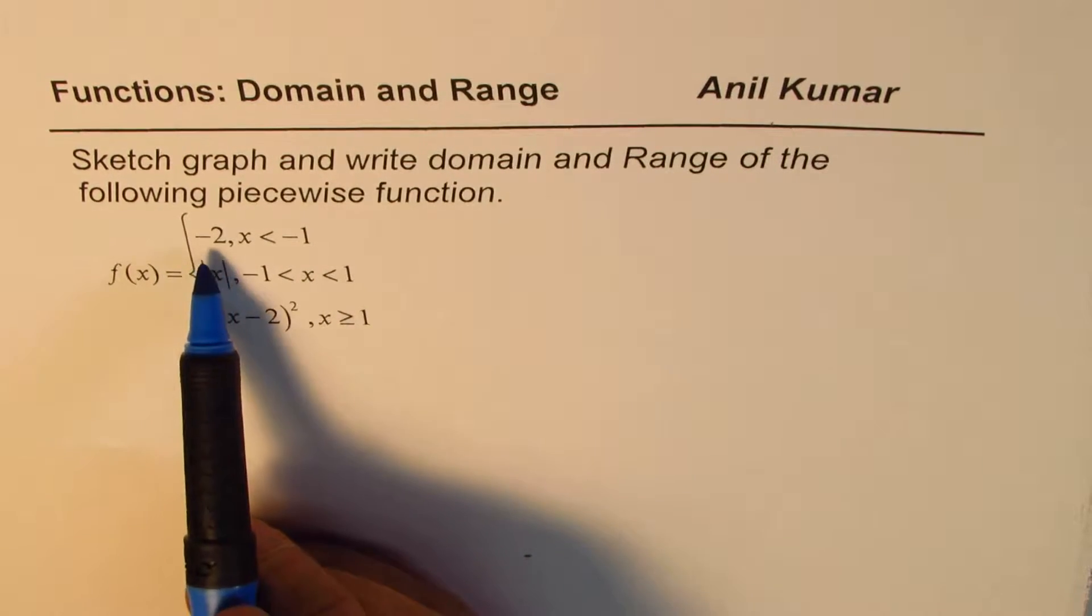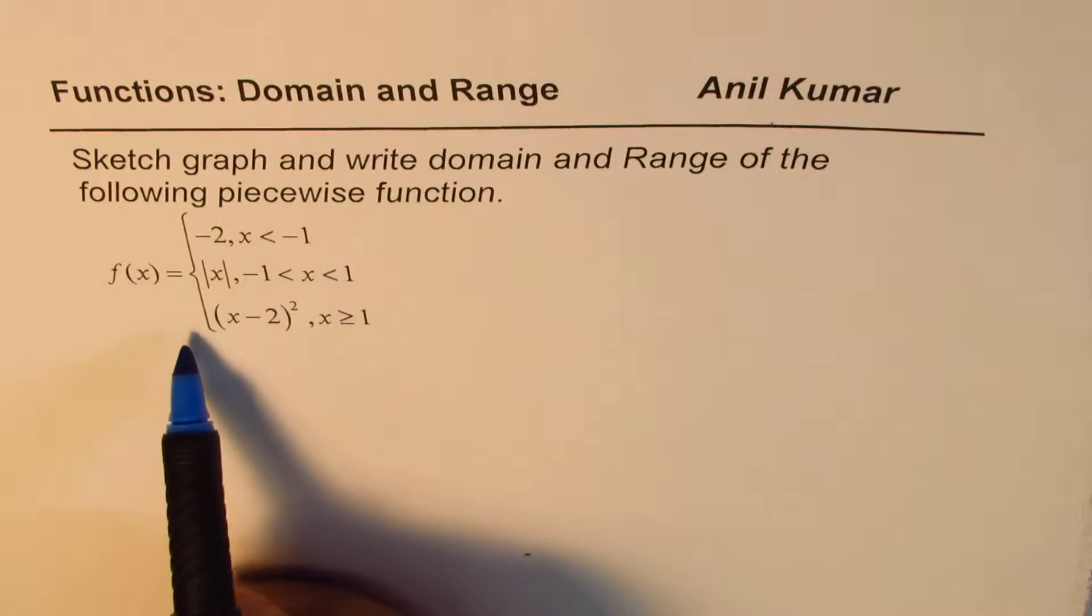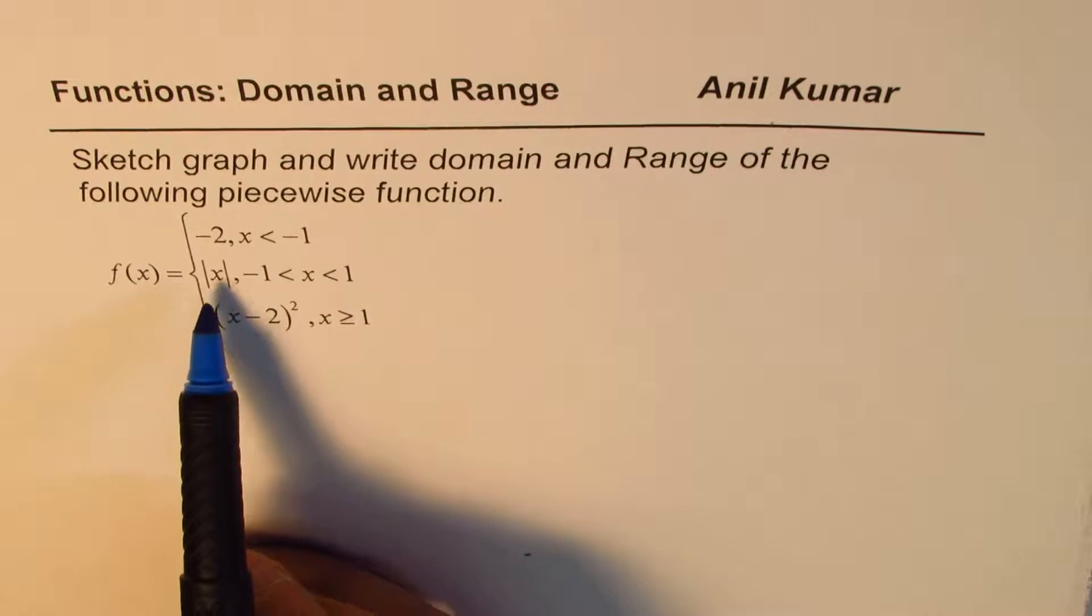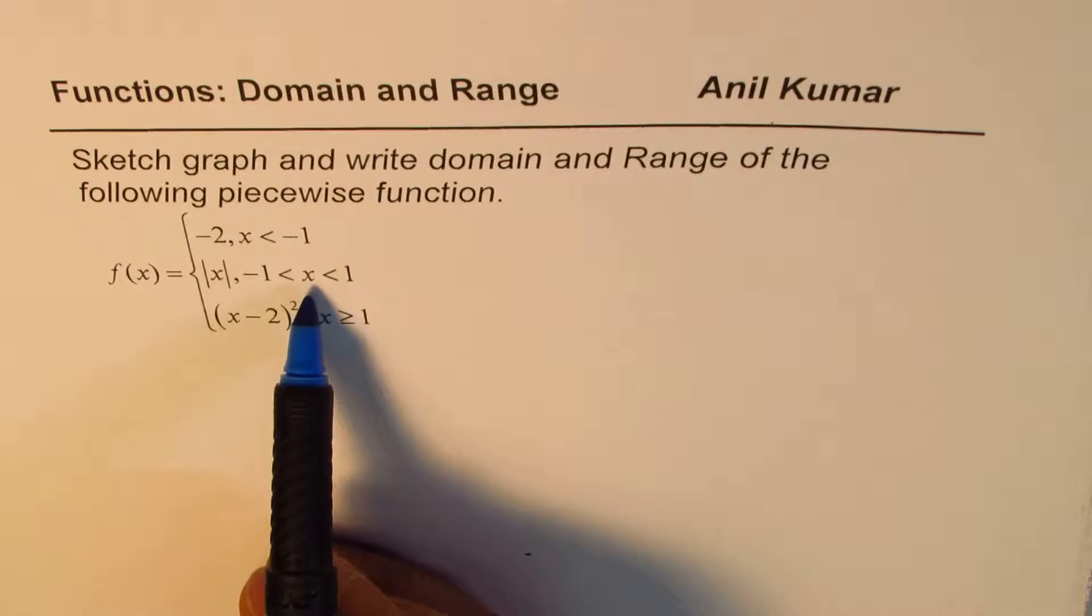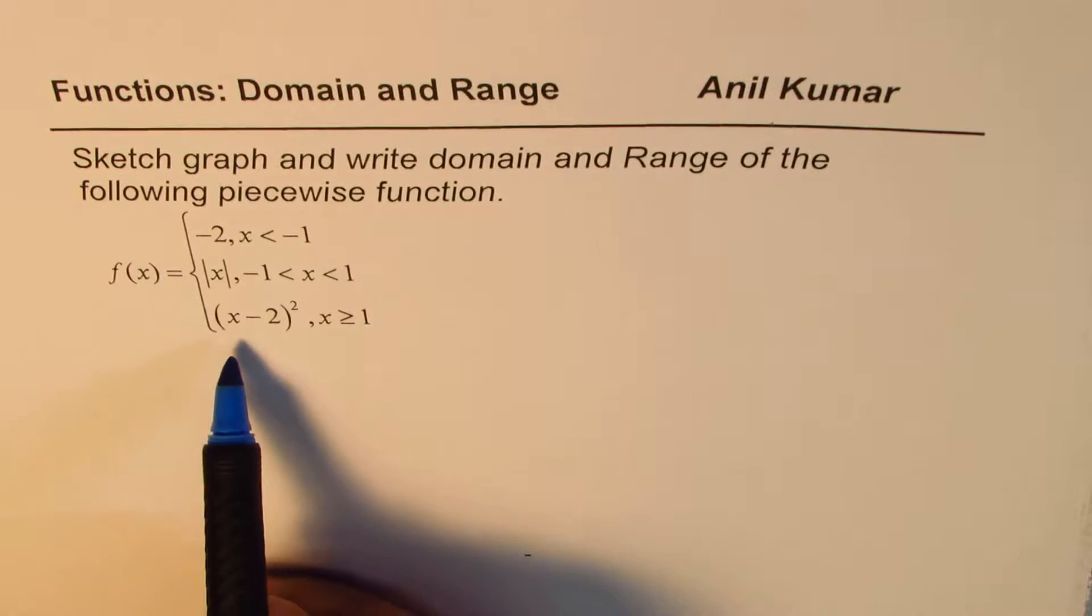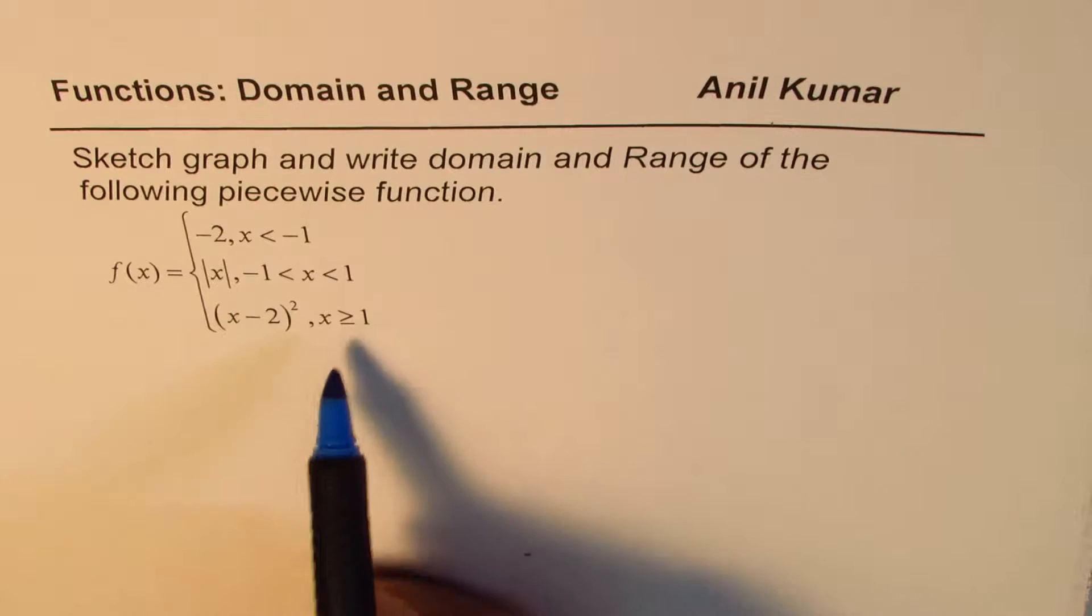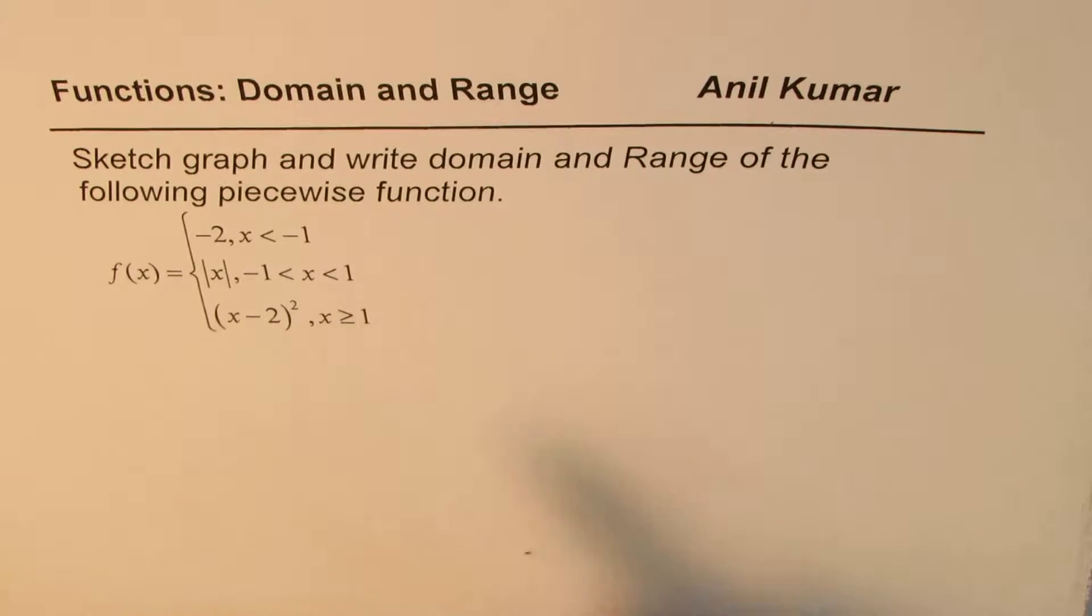f of x equals minus 2 when x is less than minus 1. f of x equals absolute value of x when x is between minus 1 and 1. And it is equal to x minus 2 whole squared for x greater than or equal to 1.